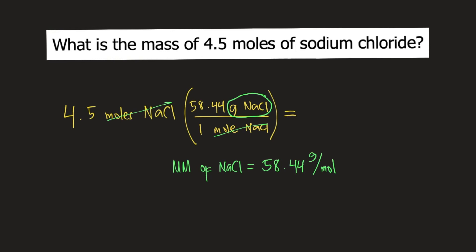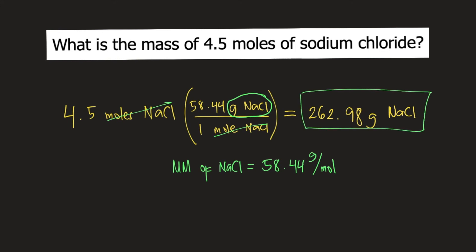So if you solve this, 4.5 times 58.44 divided by 1, this is equal to 262.98 grams of NaCl. And this is the answer to the question.